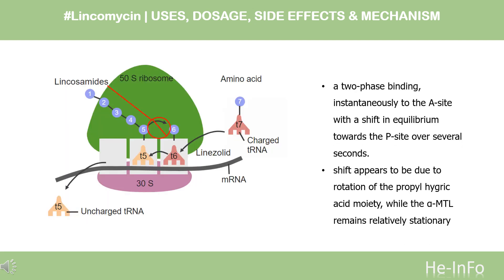Mechanism of Action: Lincomycin contains the unusual amino acid moiety propylhygric acid linked to the sugar moiety alpha-methylthiolincosamine (alpha-MTL), that, like other lincosamides, functions as a structural analog of the 3-prime end of L-prolyl-tRNA and deacylated-tRNA to interact with the 23S-rRNA of the 50S bacterial ribosomal subunit.